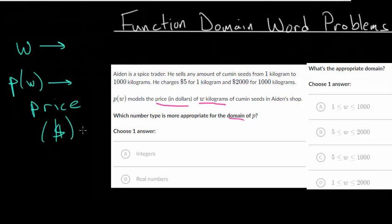Writing the units just helps make sense of the information. It helps you determine which one is your function value and which one is your independent variable value. So w, in this case, we have w kilograms of cumin seeds. So w seems to be the weight of cumin seeds. And again, notice the unit is in kilograms.